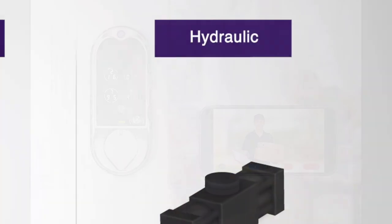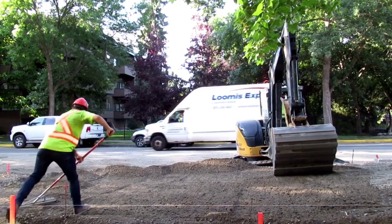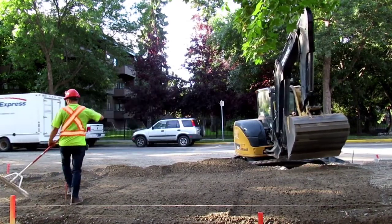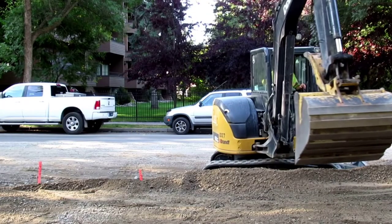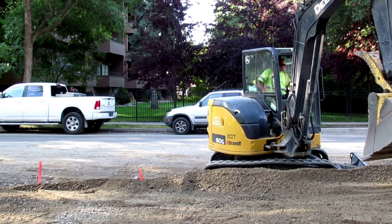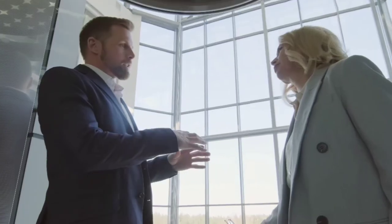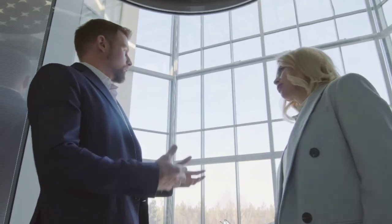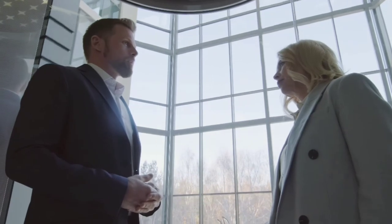Hydraulic actuators use hydraulic energy to perform a mechanical operation. They are actuated by a cylinder or fluid motor, and the mechanical motion is converted to rotary, linear, or oscillatory motion according to the needs of the IoT application. The best examples of hydraulic actuators can be observed in construction equipment like a JCB machine, and you can also experience them in lifts and escalators in malls.